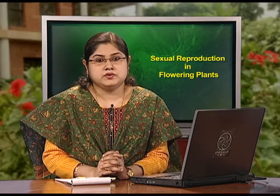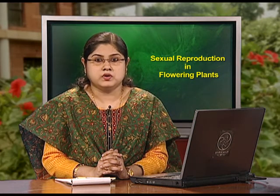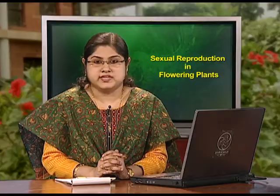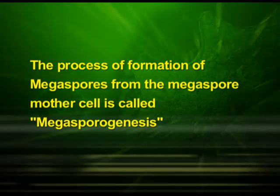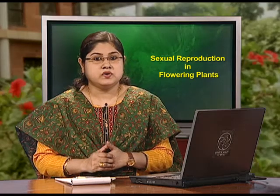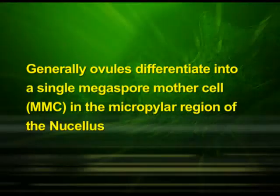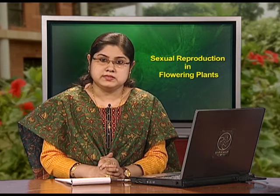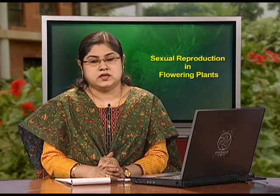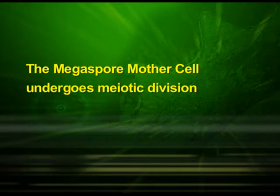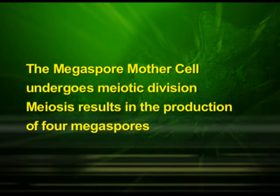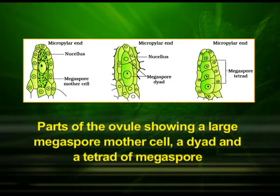Now let us discuss the process of megasporogenesis. The process of formation of megaspores from the megaspore mother cell is called megasporogenesis. Generally, ovules differentiate into a single megaspore mother cell in the micropylar region of the nucellus. It is a large cell containing dense cytoplasm and a prominent nucleus. The megaspore mother cell undergoes meiotic division, and meiosis results in the production of four megaspores. We can observe the parts of the ovule showing a large megaspore mother cell, a dyad, and a tetrad of megaspores in these diagrams.